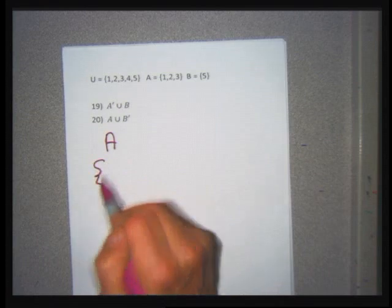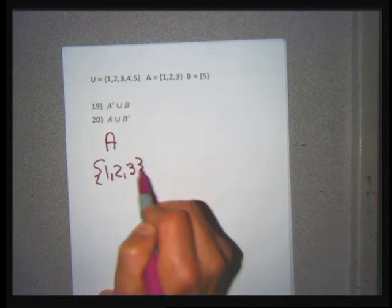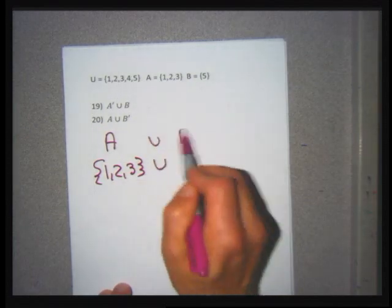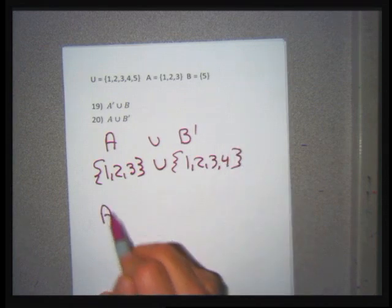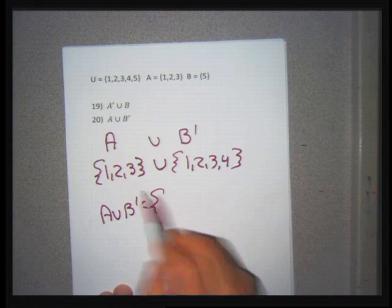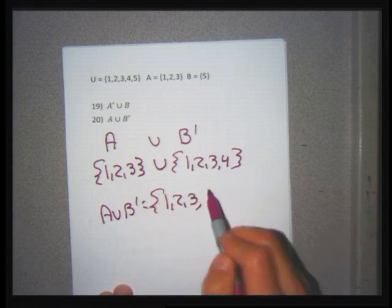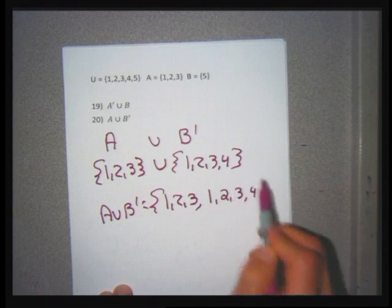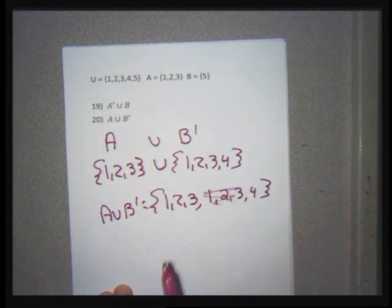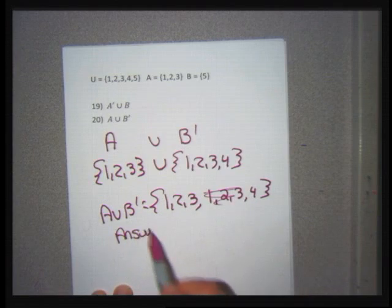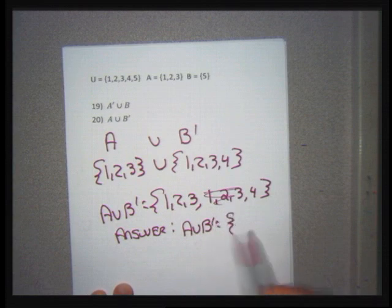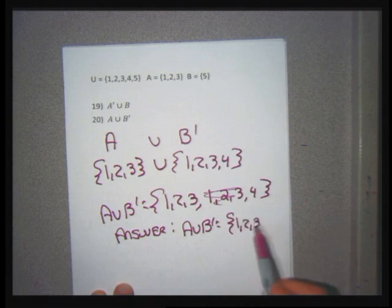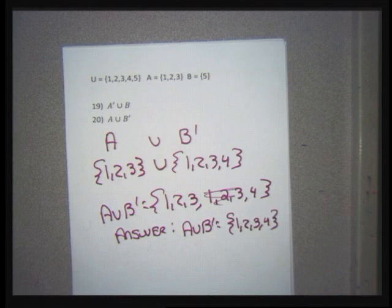Problem 20: A union B'. Set A = {1, 2, 3}, B' = {1, 2, 3, 4}. A union B' is the entire A set union B' set: {1, 2, 3} union {1, 2, 3, 4}. Get rid of duplication — the 1, 2, and 3 are written twice. Answer without duplication in nice order: A union B' = {1, 2, 3, 4}.